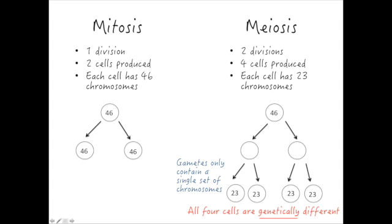These gametes only contain a single set of chromosomes. We start in our ovaries or testes with a cell with 46 chromosomes, but with two divisions we end up with a cell with 23 chromosomes. Each cell produced has 23 chromosomes — or you can write it as just one set of chromosomes — compared to mitosis where cells have 46 chromosomes, or two sets of each chromosome.